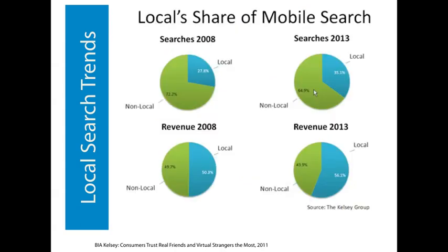A few more stats illustrate the point: looking at local's share of the mobile search market from just 2008 to 2013, the increase in local versus non-local searches and revenue really shows that the local search market is where a lot of money is going. With the adoption of mobile devices, about half of all users already have smartphones. When people are using them, they want to take action — usually for something local. They want to find a restaurant, a doctor, or an address. They are ready to take action, which is what makes local search very exciting.